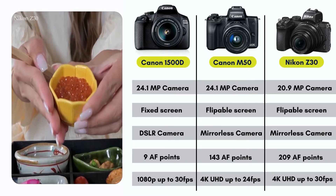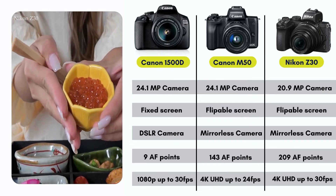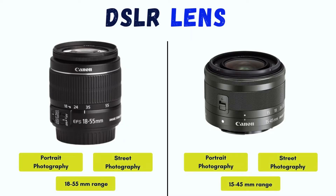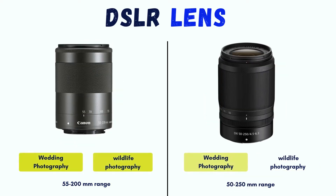Now we will discuss different types of lenses. For portrait photography, you can opt for lenses in the 15mm to 55mm range. These lenses are good for portraits and other close-up photos of people. If you want to use it for wedding photography or wildlife photography, then something with a long focal length will be good, such as a lens from 50mm to 250mm.